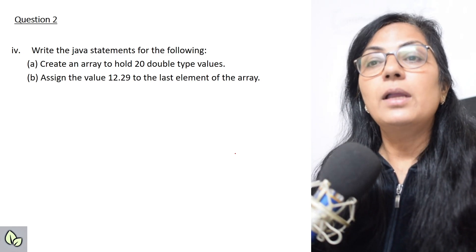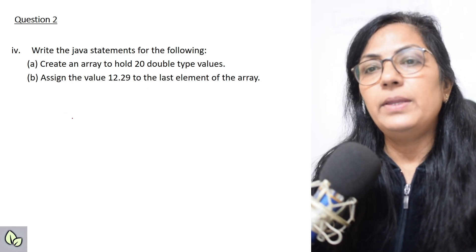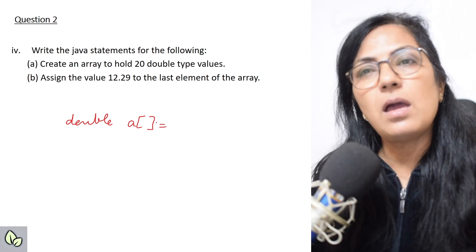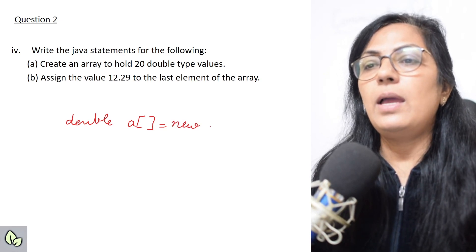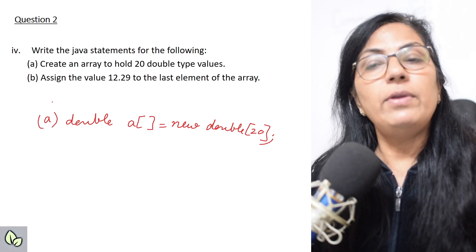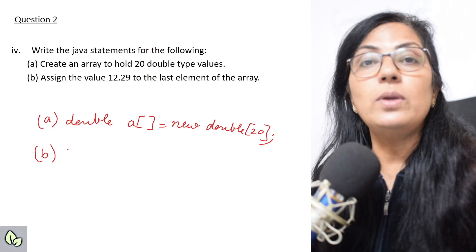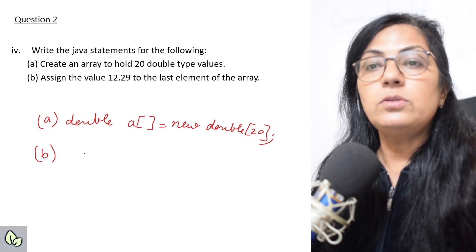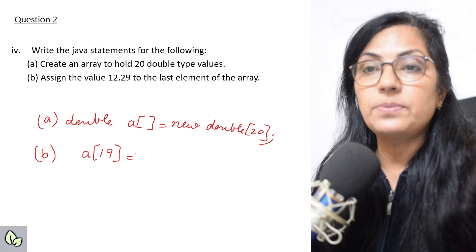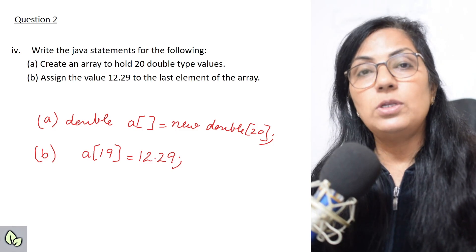Next question: write the Java statement to create an array to hold 20 double type values. The answer is: double[] a = new double[20]. When the array name is not given, you can use any name like a, num, etc. Then assign the value 12.29 to the last element of the array. The last element is a[19] — because the first element starts at index 0. So the statement is: a[19] = 12.29.